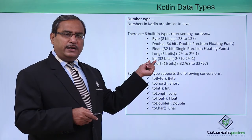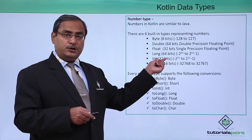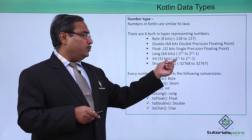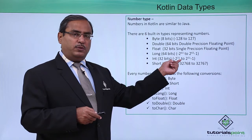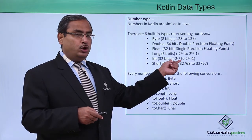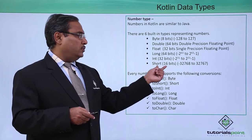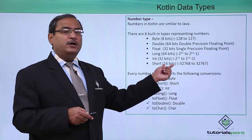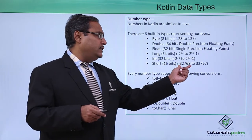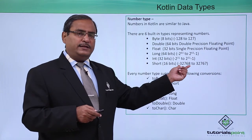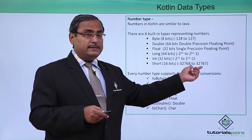Int occupies 4 bytes in computer memory, that is 32 bits, and its range is from -2 to the power of 31 to +2 to the power of 31 minus 1. Short uses 2 bytes, that is 16 bits, and ranges from -32,768 to +32,767.